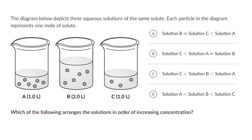For beaker A: 6 particles means 6 moles divided by 1 liter = 6 M. For beaker B: 6 particles means 6 moles divided by 2 liters = 3 M. For beaker C: 3 particles means 3 moles divided by 1 liter = 3 M. The concentrations of beakers B and C are equal at 3 M, and beaker A has the highest concentration at 6 M. So option A is the correct answer.